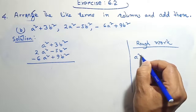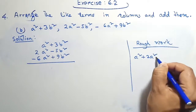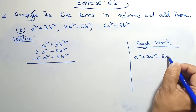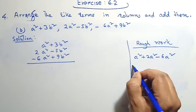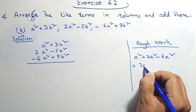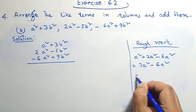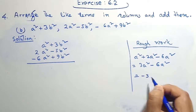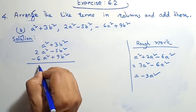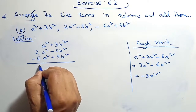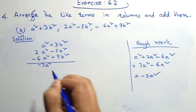Therefore we need to find the value of a². Therefore a² plus 2a² minus 6a². a² plus 2a² equals 3a² minus 6a². Therefore minus 3a² is our value of a².